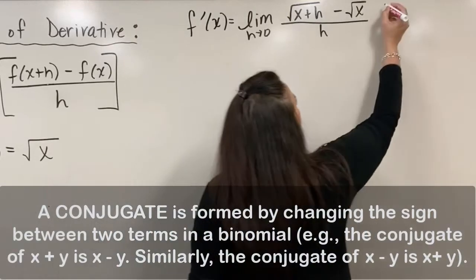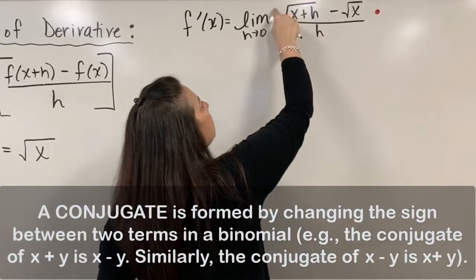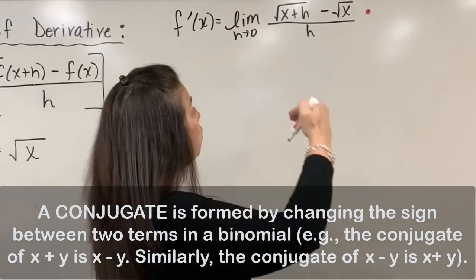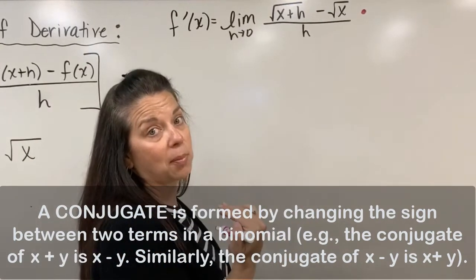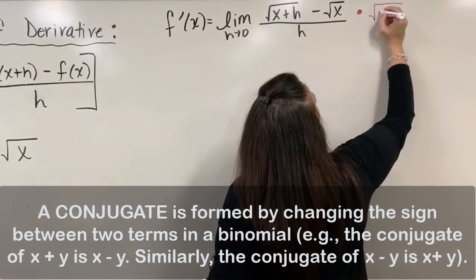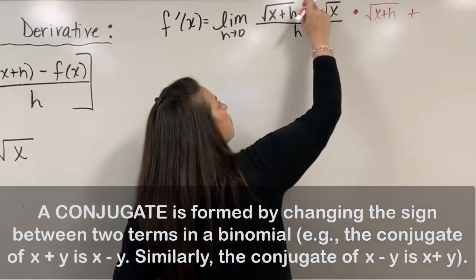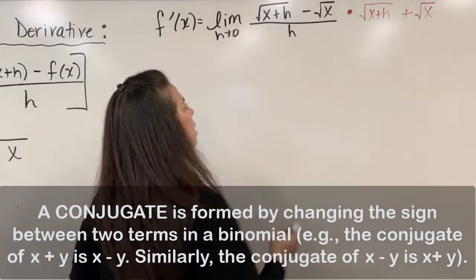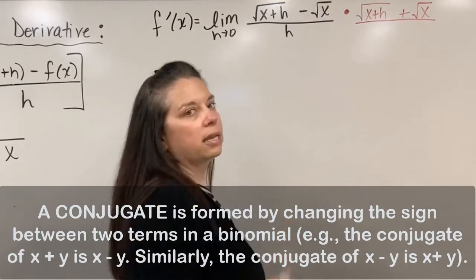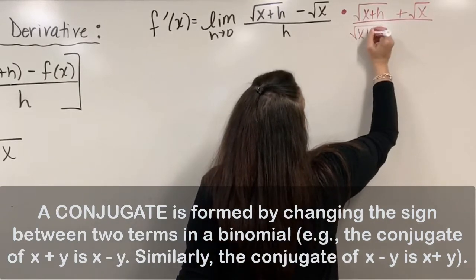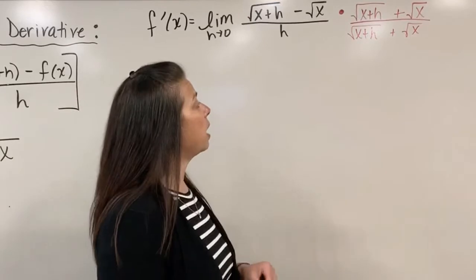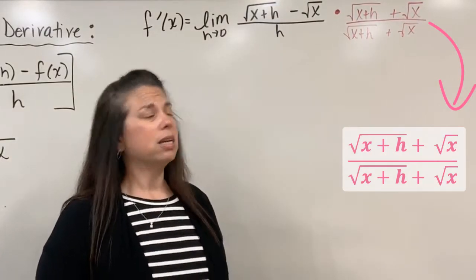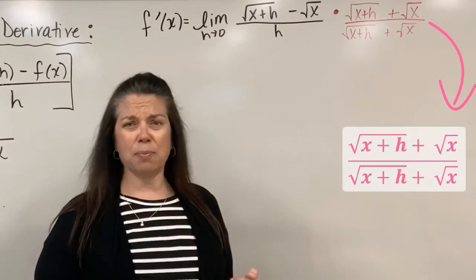The conjugate looks like this: we're going to multiply by basically the numerator, except we're going to change that subtraction to be an addition. We multiply that on top and bottom — the numerator and the denominator — by that conjugate. So we're going to have square root of x plus h, but plus rather than minus, and square root of x. So square root of x plus h plus square root of x, divided by square root of x plus h plus square root of x.